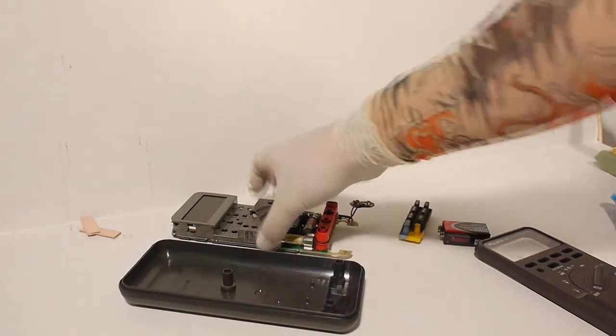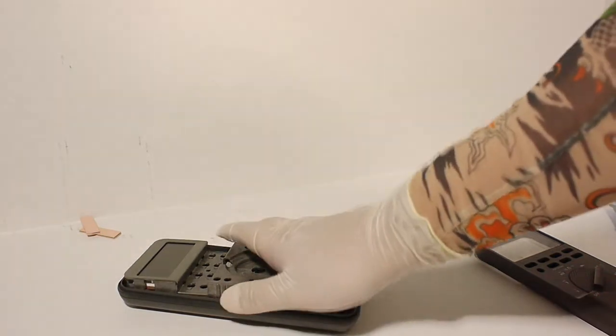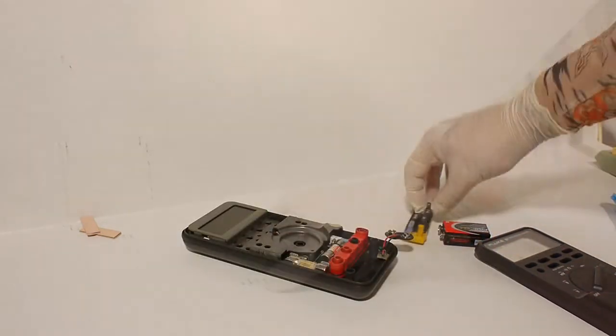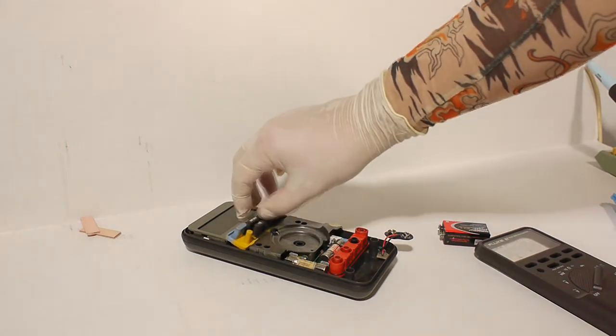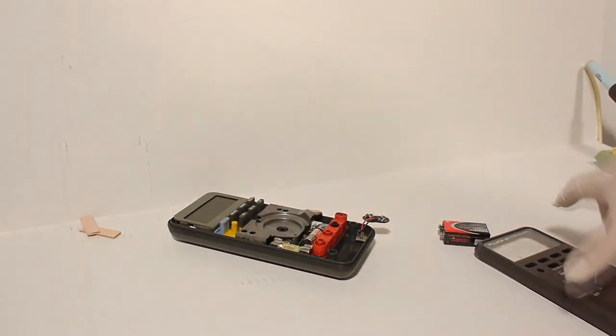Step 13: place the main PCB into the bottom case. Step 14: locate the soft keypad and place onto the main PCB.